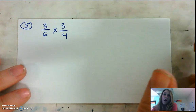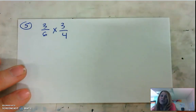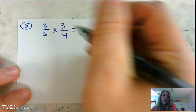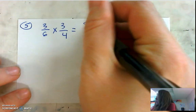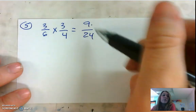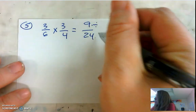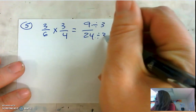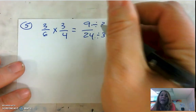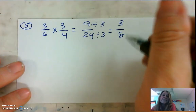Moving on now to number 5. It is a multiplication problem. When multiplying fractions, we say: multiply the numerators, multiply the denominators, simplify if necessary. So to multiply those numerators, we do 3 times 3 equals 9. We multiply the denominators: 6 times 4 equals 24. I noticed that 9 and 24 can both be divided by 3, so I am going to simplify by dividing by 3. 9 divided by 3 is 3, 24 divided by 3 is 8. So my answer of 9 twenty-fourths can be simplified down to 3 eighths. That's the answer to number 5.